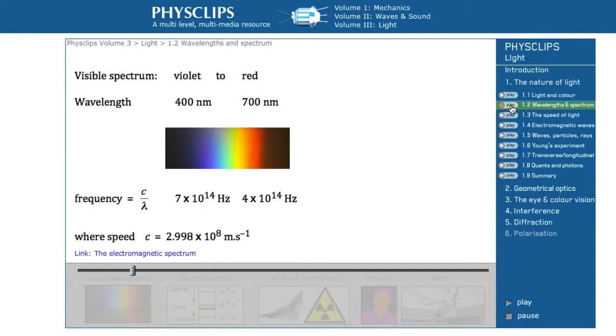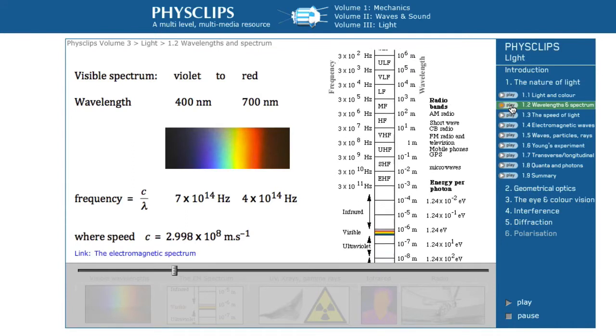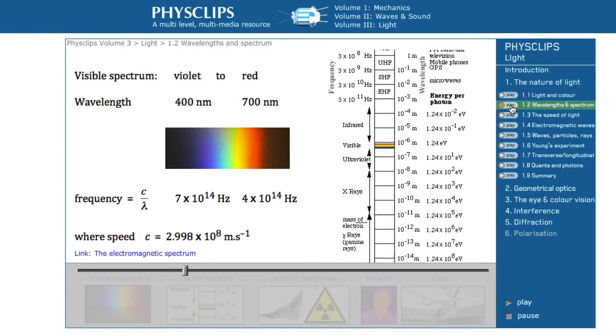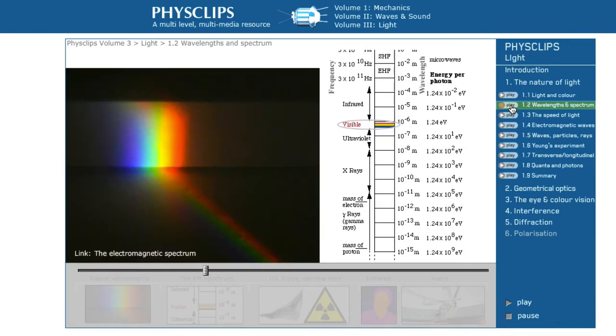The speed of light is large, so the frequencies of visible light are too high to measure directly. We now know that light is electromagnetic radiation with this range of wavelengths. Visible light covers only about one octave in the huge electromagnetic spectrum.